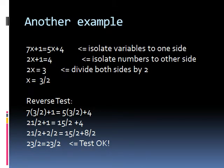So, now let's look at a more complex example. Now, if you can see here, 7x plus 1 equals 5x plus 4. So what you should do is you want to isolate variables to one side. So you subtract 5x from both sides of the equation, left and right, to eliminate 5x from the right-hand side of the equation. This yields 2x plus 1 equals 4.